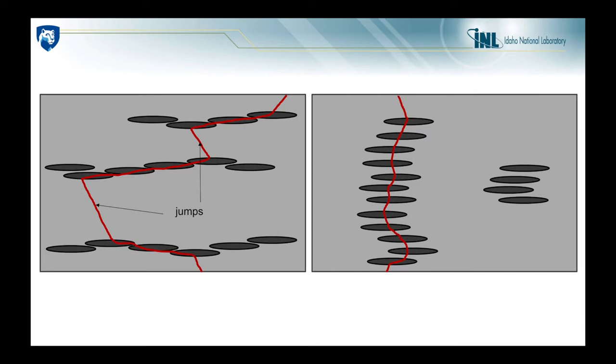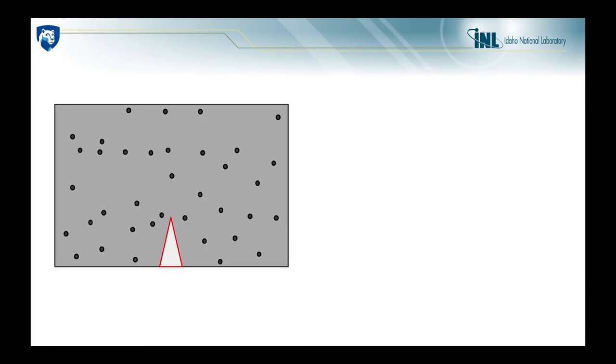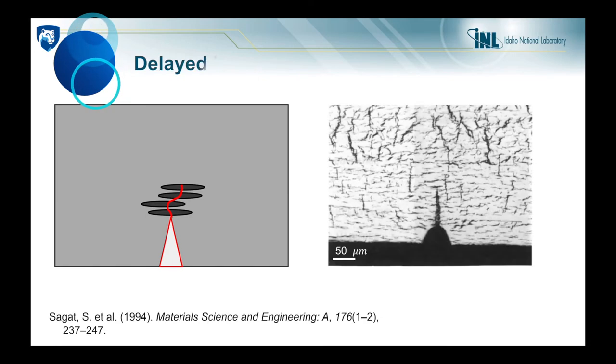So hydrides have a big impact on crack propagation and the inverse is true as well. The presence of a crack greatly influences hydride precipitation. For example, a crack tip will attract hydrogen atoms and hydrides will precipitate near the crack, which will further ease crack propagation. This phenomenon, called delayed hydride cracking, has been experimentally observed. On the right, a small notch was added to a sample and a large hydride cluster precipitated on top of it.